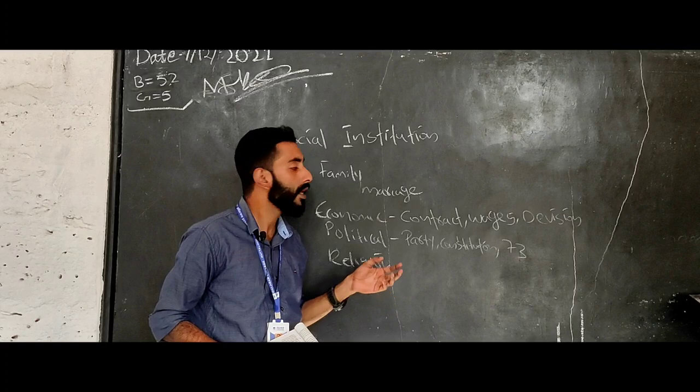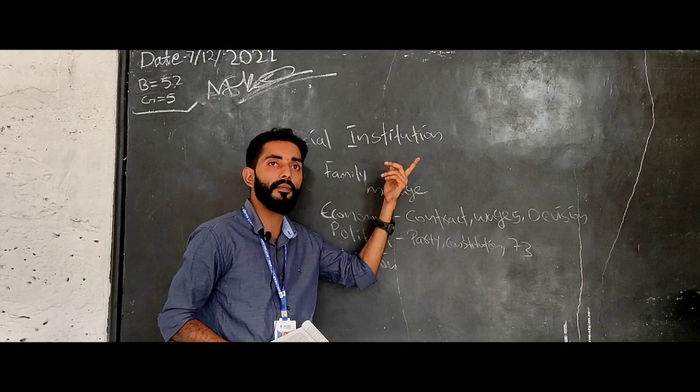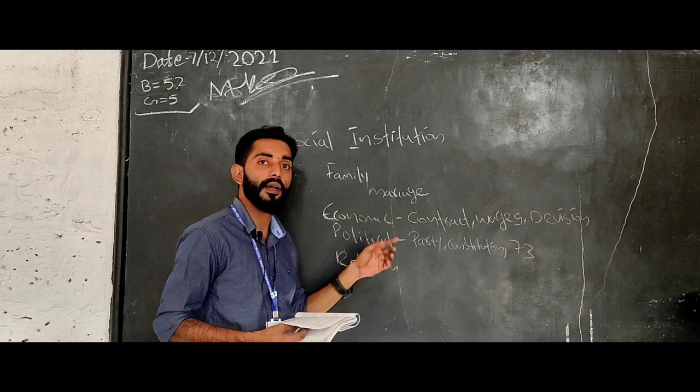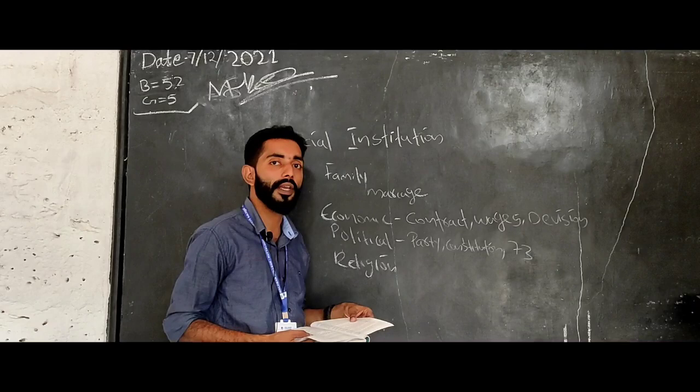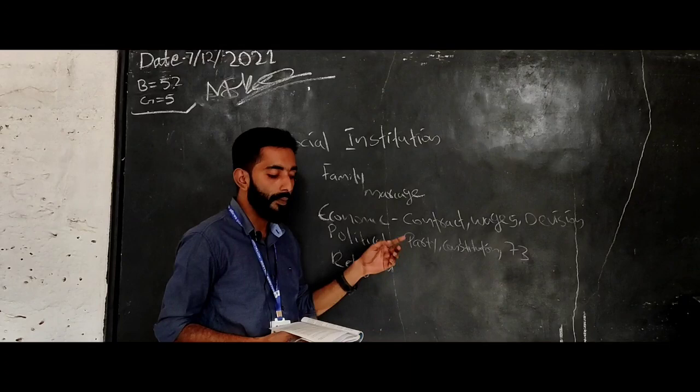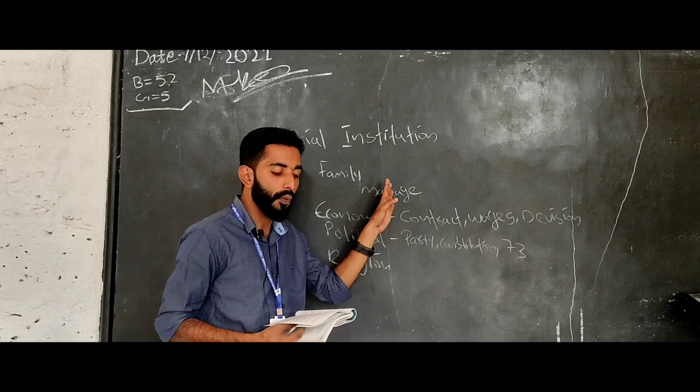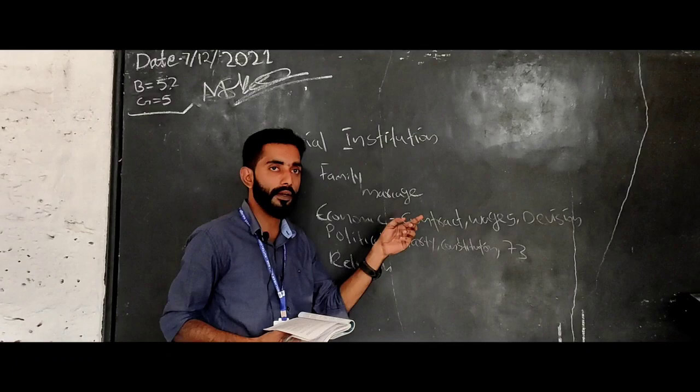The rule shall be polyandry. Polyandry is two types - sororal polyandry is one thing.